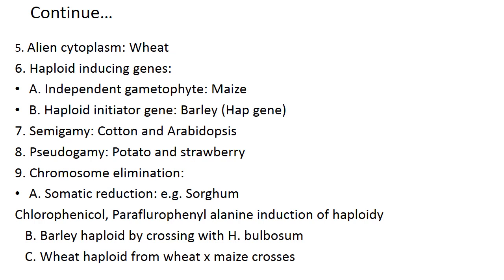Next is semigamy, reported in Gossypium and Arabidopsis. Pseudogamy is used in potato and strawberry. Chromosome elimination in somatic reduction, for example in sorghum. With the help of chloramphenicol, parafluorophenylalanine and colchicine — these three chemicals which induce haploid — this is chemically induced haploid production.